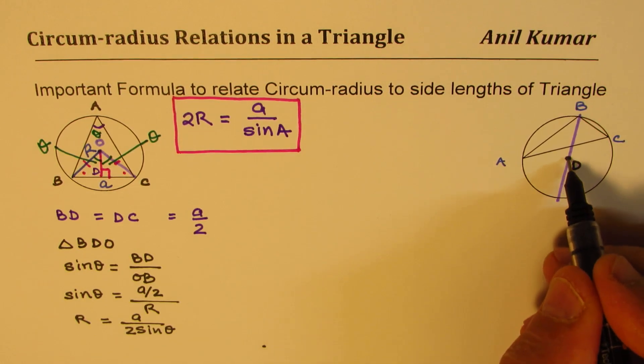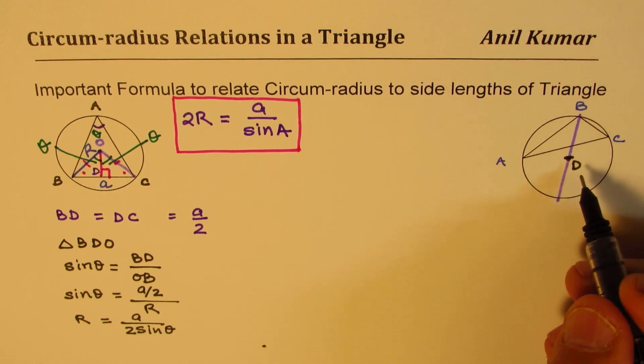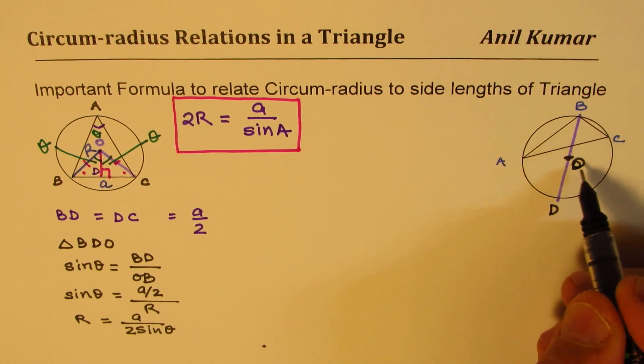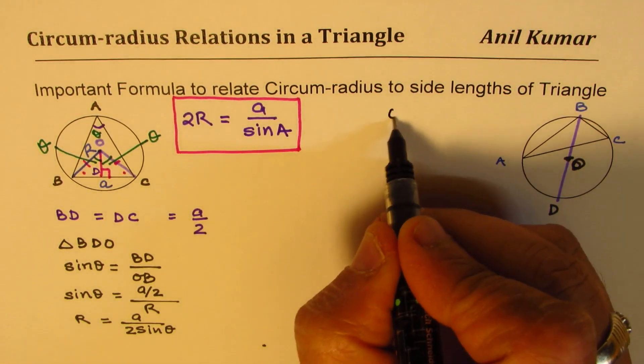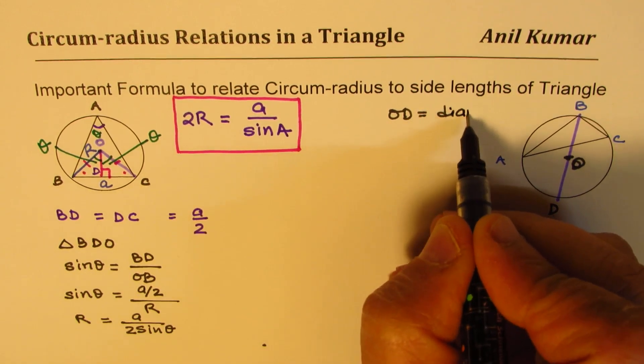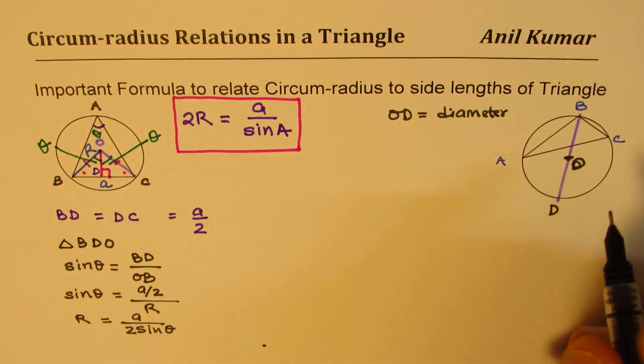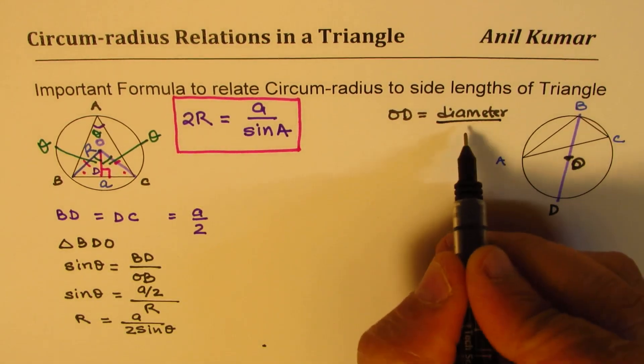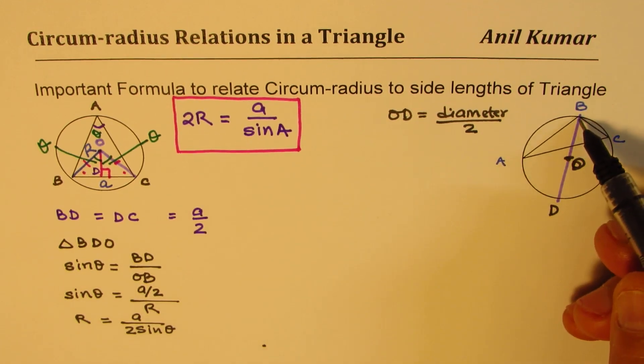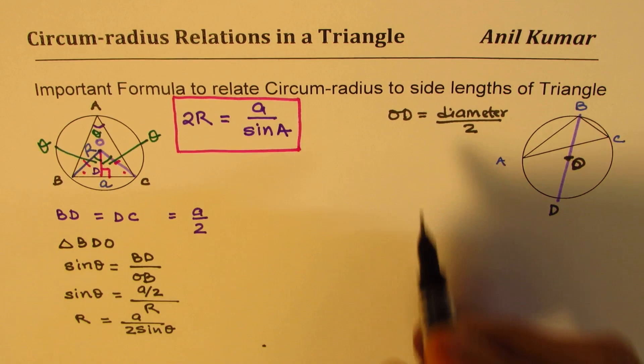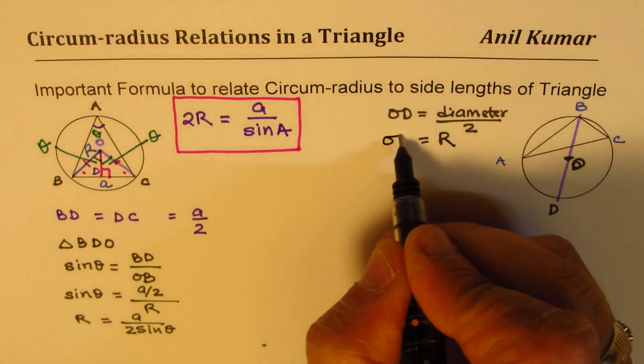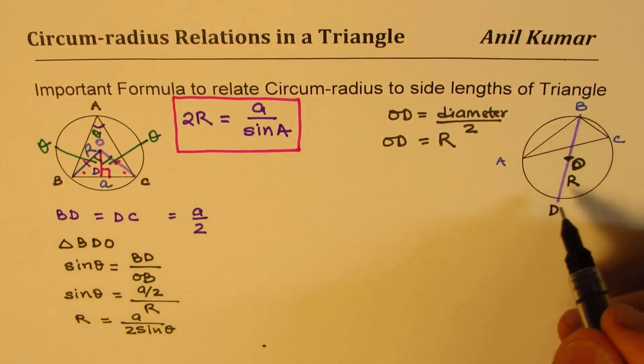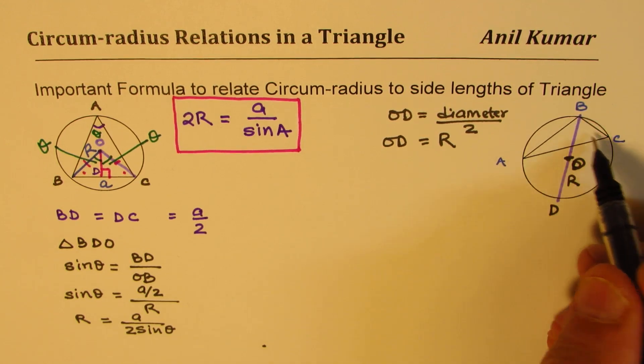So we have BD is the diameter. Half of the diameter, which is the radius R for us. We'll call this as radius R, the circum-radius. Now we need to find this radius with respect to sides ABC of a triangle.